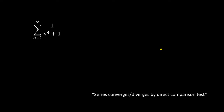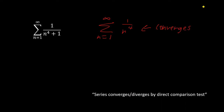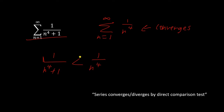Say we have this series — it looks very similar to 1/n⁴, doesn't it? By the p-series test, we know that the 1/n⁴ series converges. So if we can somehow prove that our series is always smaller than the 1/n⁴ series, then we know it will also converge by the direct comparison test. Basically, we're trying to prove that 1/(n⁴+1) is always less than 1/n⁴. If we cross multiply, n⁴ is less than n⁴+1, subtract n⁴ from both sides, 0 is less than 1 — a true statement, always true. So we've proved our series is always smaller than 1/n⁴, and it's going to converge by the direct comparison test.